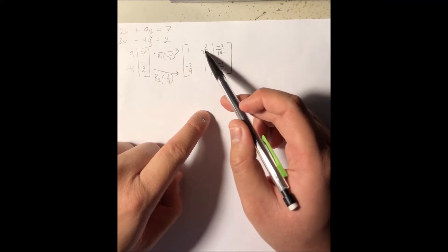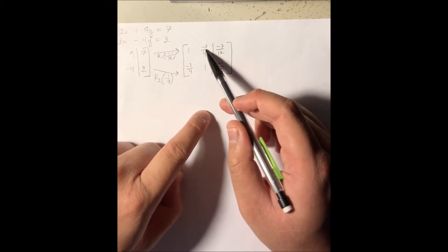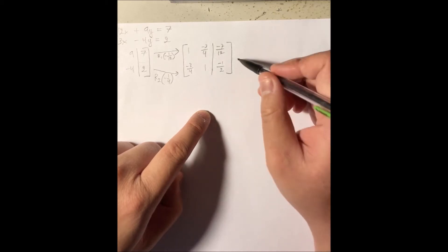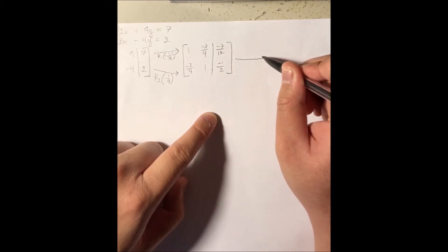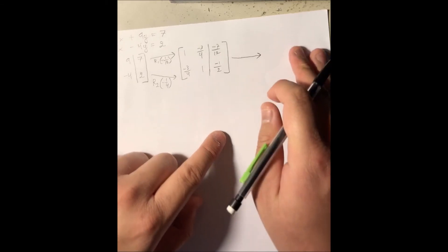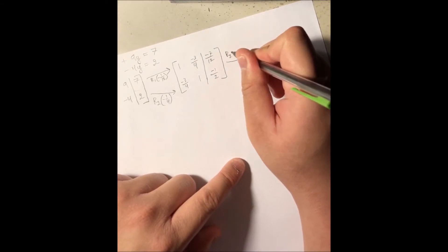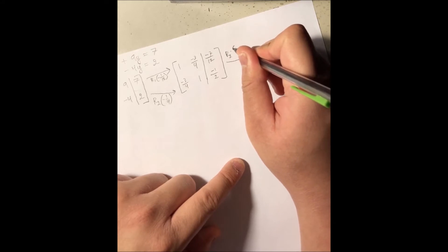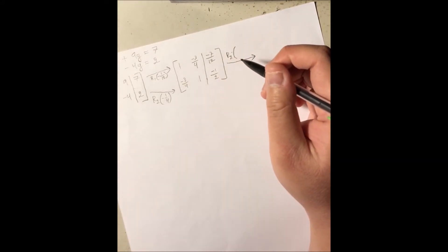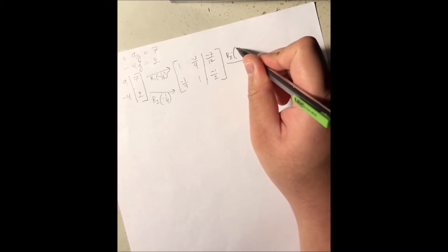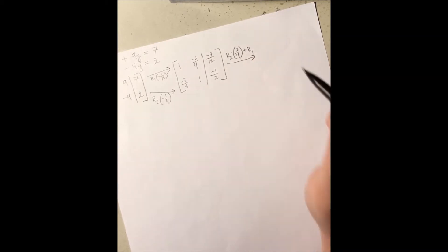Now I want to convert either the top or the bottom leading entry down to 0 first. Let's say I want to convert the top one. So I'm going to take row number 2, multiply it by 3 over 4, and then add it to row 1.